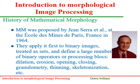Here is some history of mathematical morphology. It was proposed by Jean Serra et al. at École des Mines de Paris in France in 1964. They applied it first to binary images, treated as sets, and defined a large number of binary operators of processing blocks such as dilation, erosion, opening, closing, granulometry, thinning, etc.